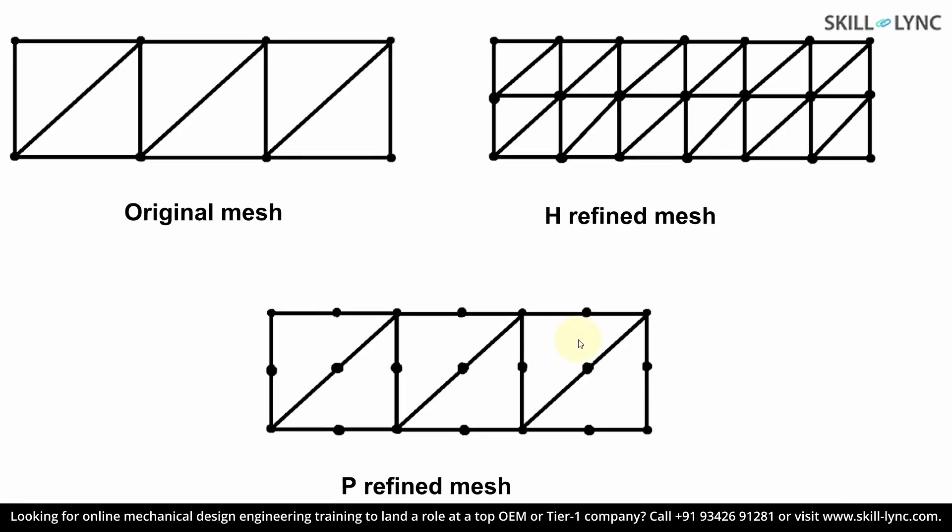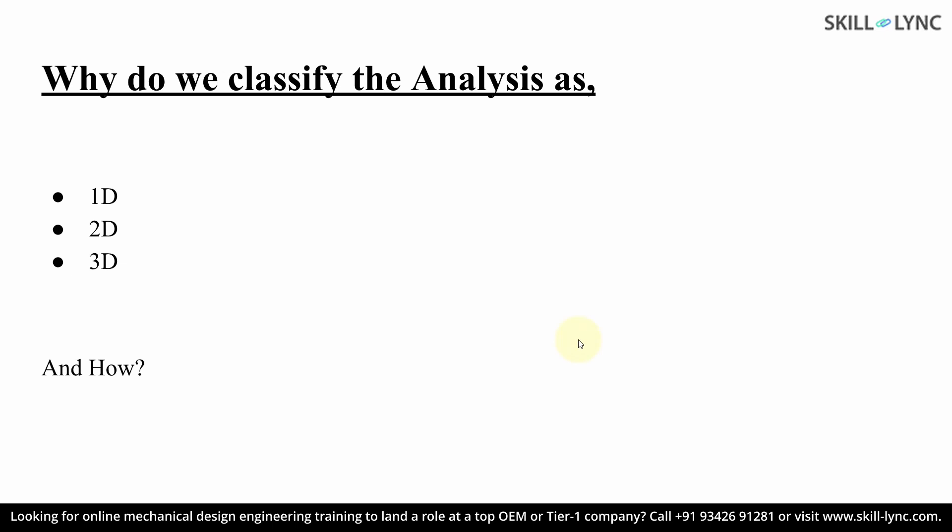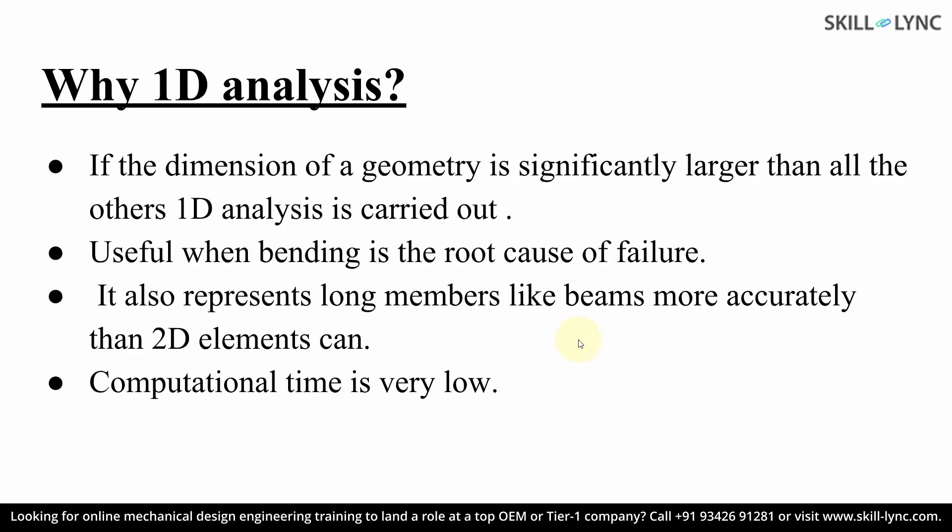In FEA, depending on our requirement, we reduce the computational power required to solve a problem using different types of analysis: 1D, 2D, and 3D. If your FE analysis consists of a model which has one dimension significantly larger than the others, we tend to go for a 1D analysis. For example, consider a long beam where you are interested in deformations caused by bending — since the beam is long enough, a 1D analysis is sufficient. 1D elements are used to represent long members like beams and help reduce the computational power required.